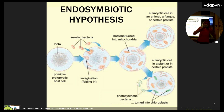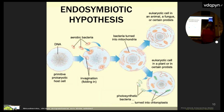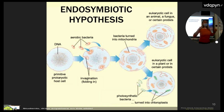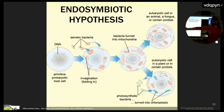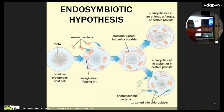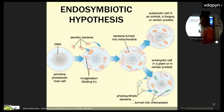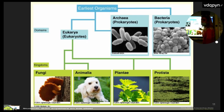The endomembrane system: the nuclear envelope is continuous with the endoplasmic reticulum — first the rough ER, then the smooth ER — then things go to the Golgi, which is like the UPS man, and then they can leave the Golgi and either be packaged for exocytosis or stay within the cell. A phospholipid bilayer is two layers, so if you pinch in, you technically have four layers around the nucleus.